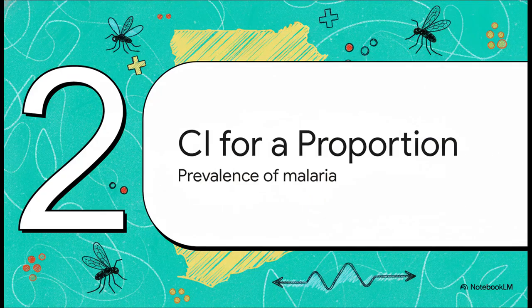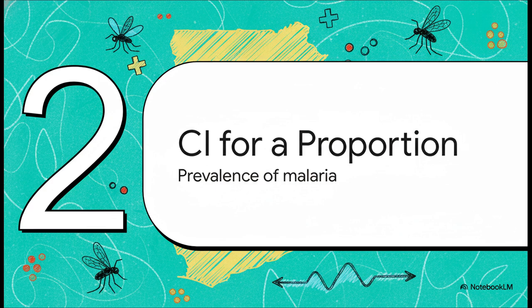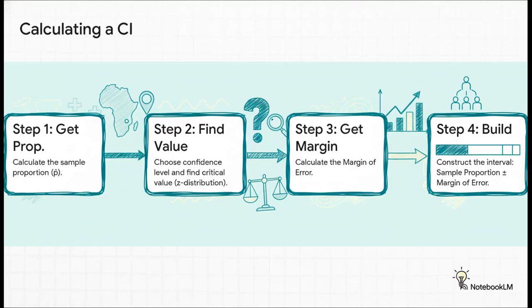That's great for averages. But what if your data is more of a yes or no thing? Like what percentage or proportion of a community has malaria? Well, confidence intervals are amazing for that too. And the process is going to look super familiar. Step one, you calculate your sample proportion. Let's say 20% of kids in your sample have malaria. Then you pick your confidence level, find a critical value, this time usually from a Z distribution, which works great for this kind of data. After that, you calculate your margin of error and build your interval. It's the same exact logic, your best guess, plus or minus a little wiggle room.